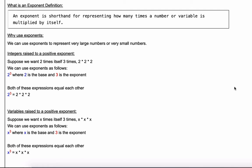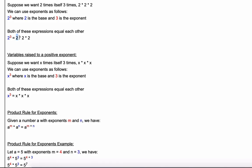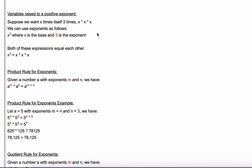Let's look at integers raised to a positive exponent — the simplest example of using an exponent. Suppose we want to take the number two and multiply it by itself three times. We're used to writing two times two times two, but we can use exponents instead: we take the number two and raise it to the three, read as 'two raised to the third power,' where two is the base and three is the exponent. Both expressions equal eight.